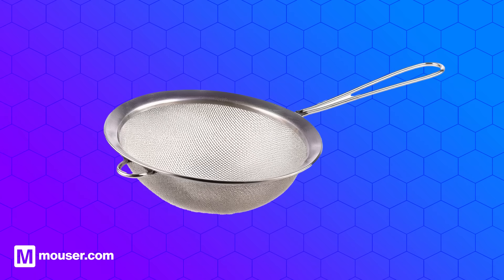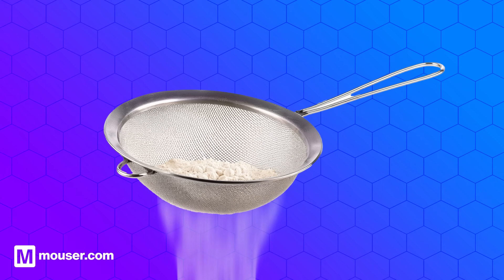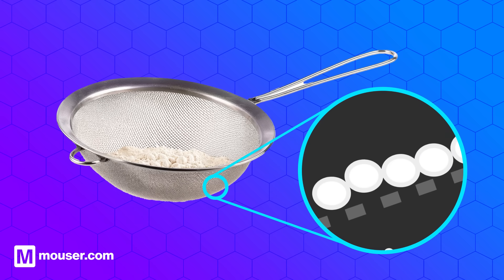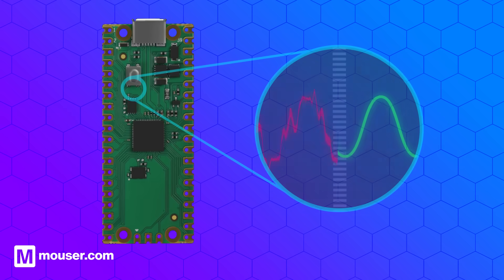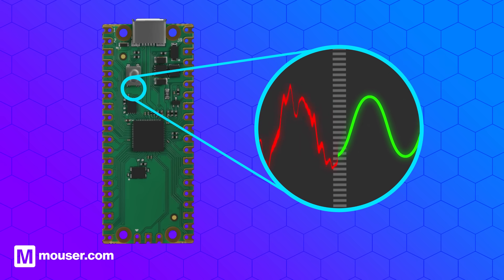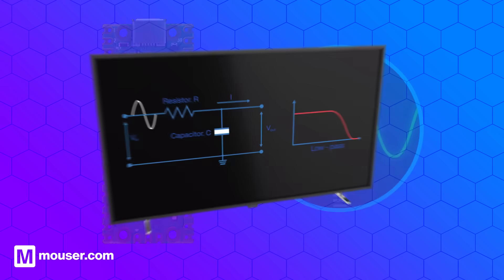You can think of a filter as being similar to a sieve in your kitchen. Just like a sieve lets fine flour pass through while holding back larger lumps, an electronic filter lets certain frequencies pass while blocking others. The size of the holes in the sieve is like the filter's frequency range — only signals that fit can get through.